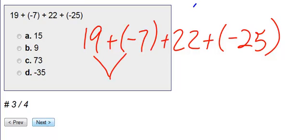So 19 and negative 7, we get positive 12. There's more positives than negatives. I'm going to bring down the rest of the problem.